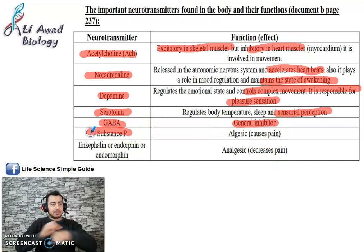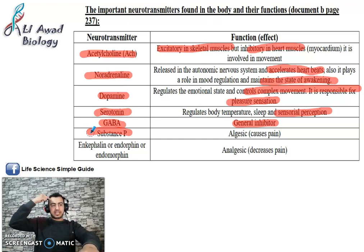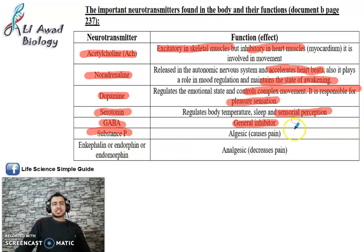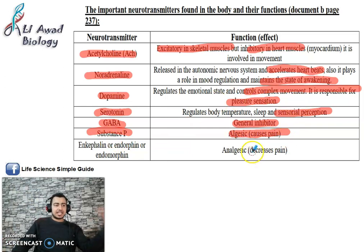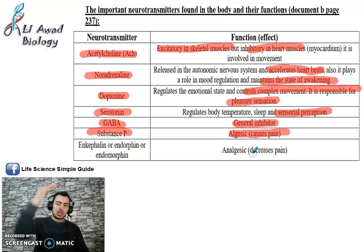Substance P — when you get injured, nervous messages travel through several nerves to reach the brain. The neurotransmitter carried in these messages is called Substance P. It causes pain — the higher its concentration, the more pain you feel, because the nervous message at the level of the synapse is coded by concentration.